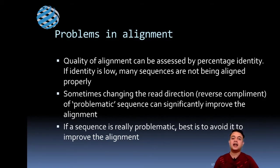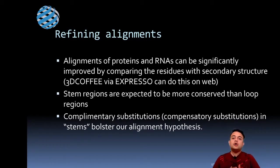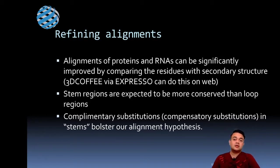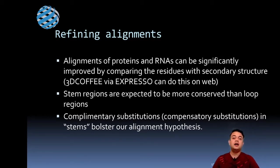Alignments of proteins and RNA molecules can be significantly improved by comparing residues with secondary structure. If you don't have access to software like Geneious, you can use websites such as 3D-Coffee via Expresso. You can search for 3D-Coffee and use it for refining alignments of structural coding regions — for example, tRNA or ribosomal RNA — which have secondary structures that can greatly improve the alignment.